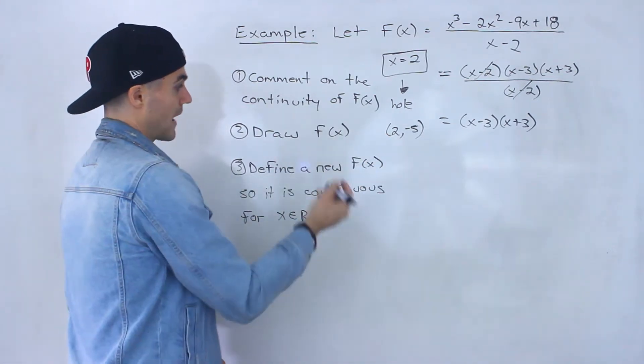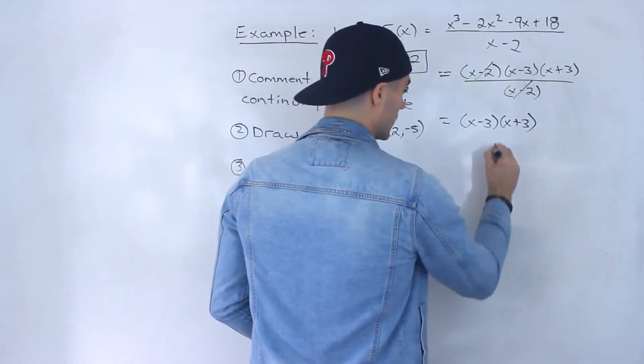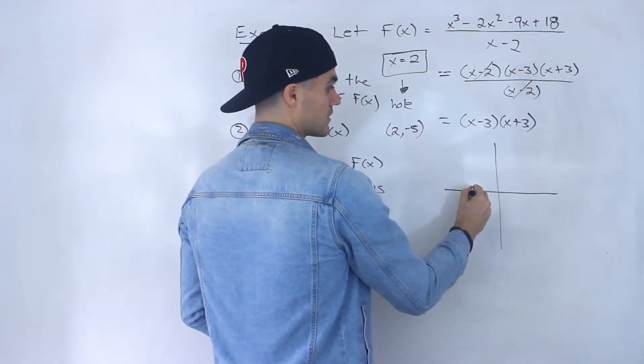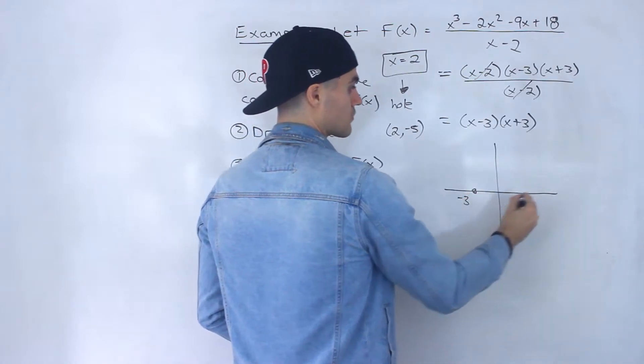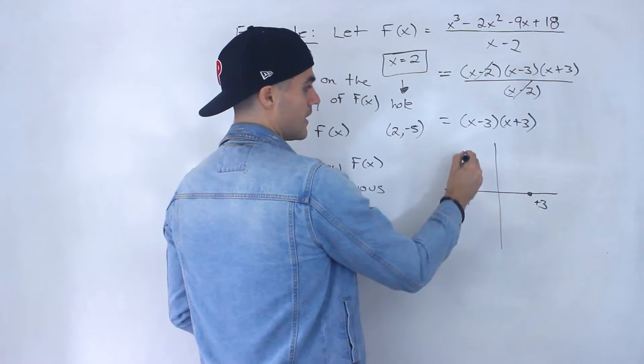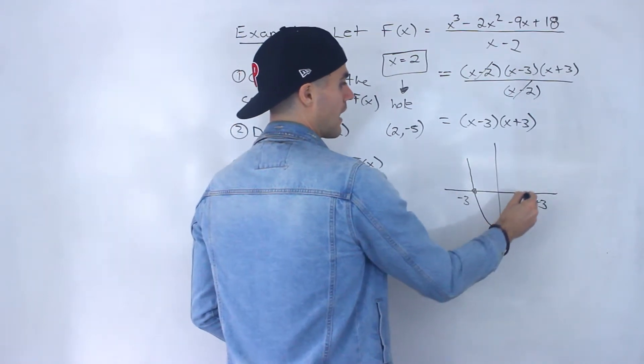And you can actually graph this, actually we have to do that in number 2. So what you would do is you would take this and you would graph it. So it would be negative 3, positive 3. This is just a parabola. That looks like that.